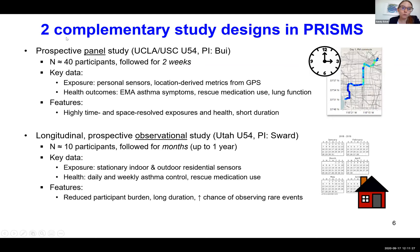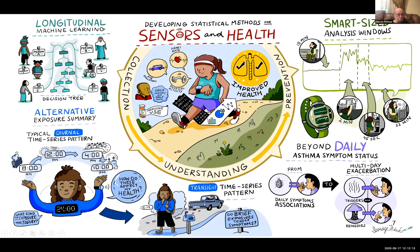Just to give you a sense of the types of studies that could use these kinds of sensors — in the UCLA/USC group, they proposed a prospective panel study with about 40 people followed very intensively for two weeks, where people were actually wearing monitors, wearing a smartwatch, having to charge these devices nightly — very intensive, a lot of really rich data. The Utah group took a complementary approach where they put just a sensor inside somebody's home and a sensor outside somebody's home and had daily questionnaires. It was a lot less burdensome, so they were able to do it for a longer period of time, but the data wasn't quite as personal or as rich. The longer duration let you maybe catch some more rare types of outcomes.